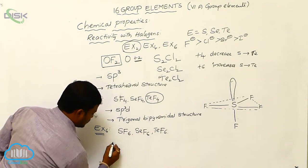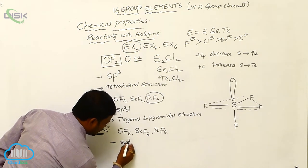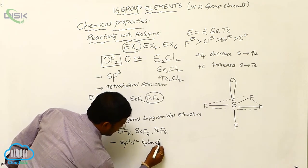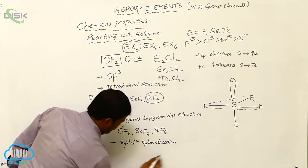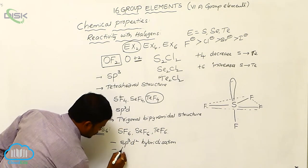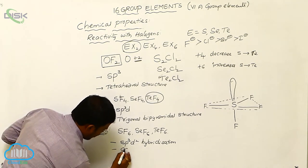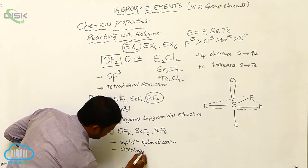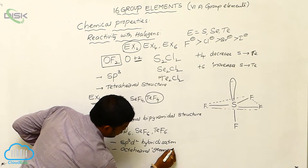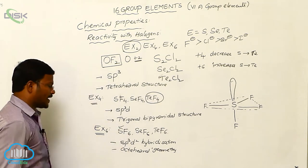In all these EX6 compounds, the sulfur, selenium, and tellurium atoms exhibit SP3D2 hybridization. Due to SP3D2 hybridization of sulfur, selenium, and tellurium, they show octahedral geometry. The most stable hexafluoride among these three is sulfur hexafluoride.